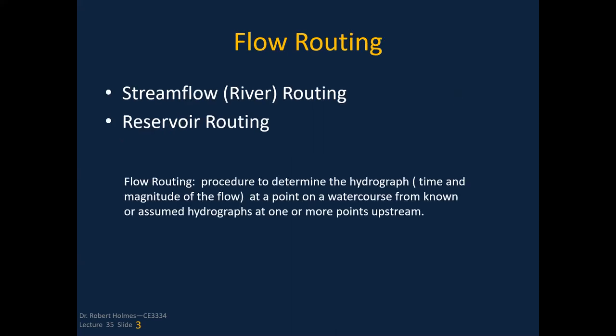Let's back up and talk about flow routing in general. We have two major types: streamflow river routing and reservoir routing. Flow routing is a procedure to determine the hydrograph at a point on a water course from known or assumed hydrographs at one or more points upstream.